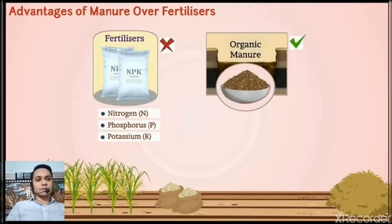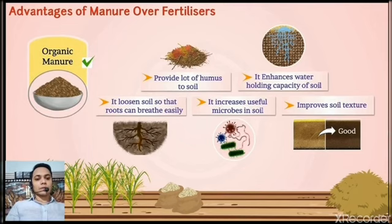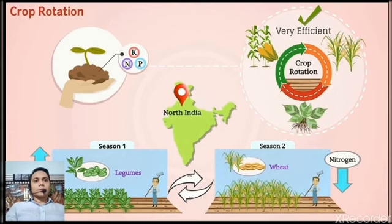Advantages of manure over fertilizer: In order to maintain the fertility of the soil, we have to substitute fertilizer with organic manure or leave the field uncultivated in between two crops. Organic manure is considered better than fertilizer because it provides lots of humus to the soil, enhances water holding capacity, loosens the soil so that roots can breathe easily, increases useful microbes in soil, and improves soil texture. Another method of replenishing the soil with nutrients is through crop rotation — growing different crops alternately. Earlier, farmers in northern India used to grow legumes as fodder in one season and wheat in the next season, which helped in replenishment of soil with nitrogen. Farmers are being encouraged to adopt this practice.